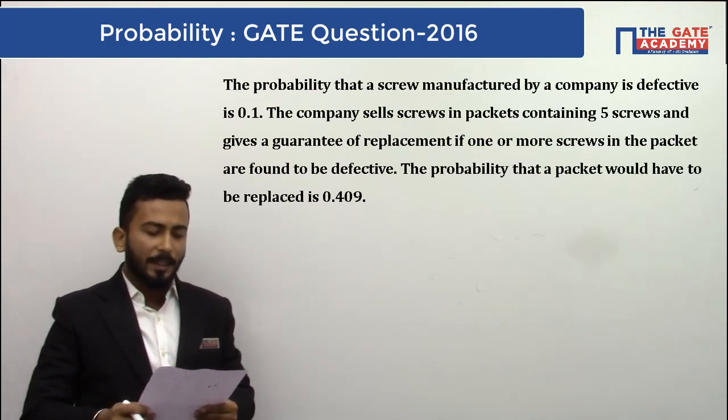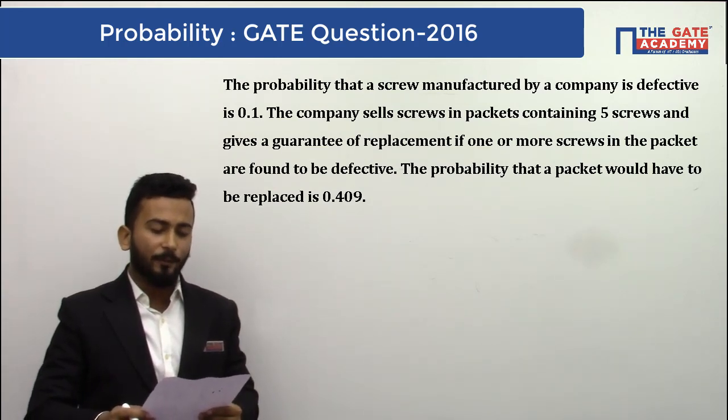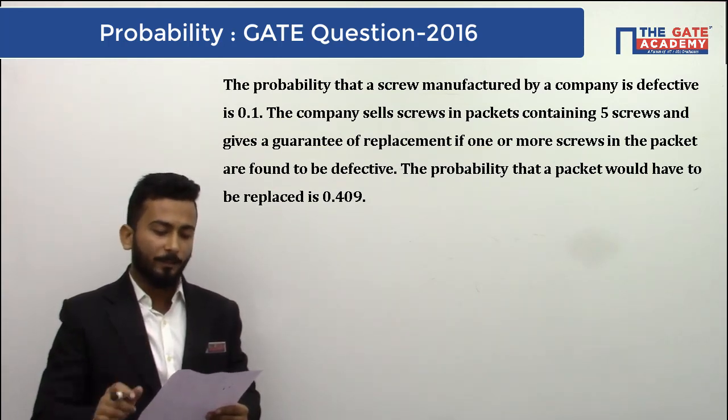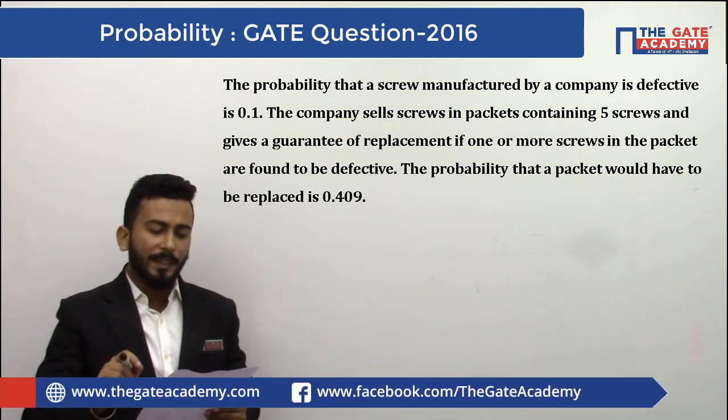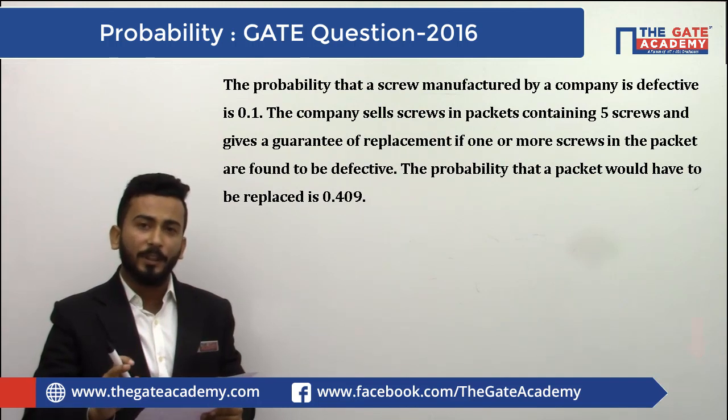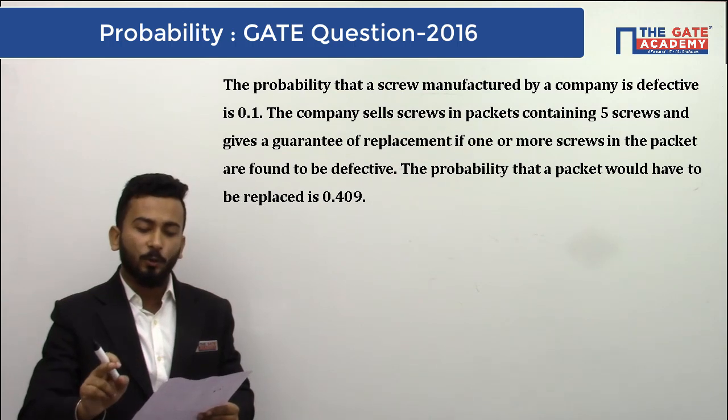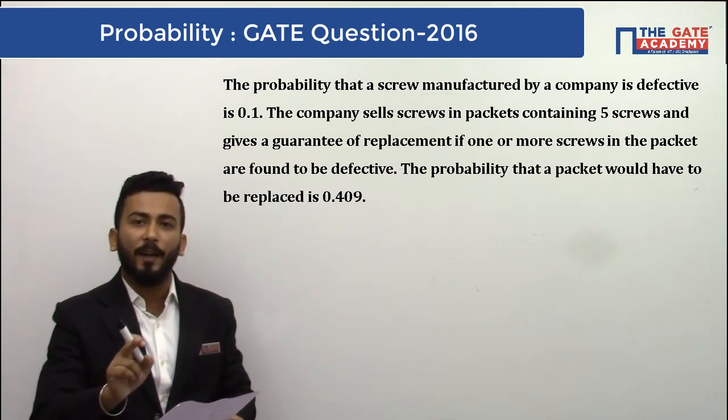The probability that a screw manufactured by a company is defective is 0.1. The company sells screws in packets containing five screws and gives a guarantee of replacement if one or more screws in the packet are found to be defective.